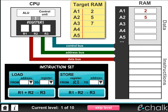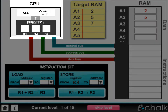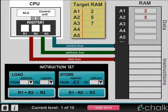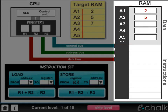In this activity, you are presented with a visual model of a simple computer system. Here is a CPU with three registers: R1, R2, and R3. Over here is the RAM. The memory addresses A1 to A5 are used to store data. The instructions that make up your program will be stored in this area of RAM.